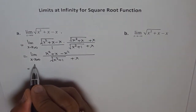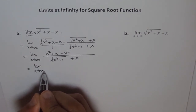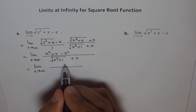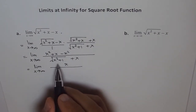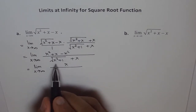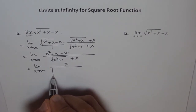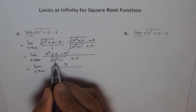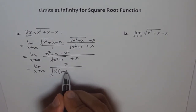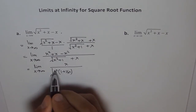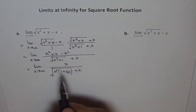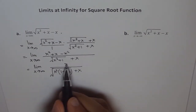We further simplify: x² minus x² is zero, so in the numerator we are left with just x. In the denominator, we factor out x² under the square root. Taking x² common, we are left with sqrt(x²(1 + 1/x²)) plus x. The idea is to take x outside the square root and then get it cancelled with the x in the numerator.